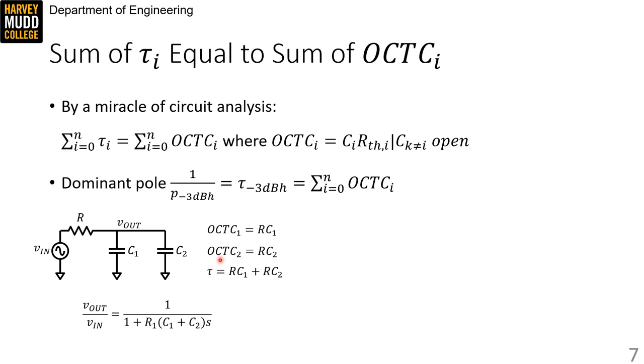The second open circuit time constant, OCTC2 for C2, will be R times C2, because this will be an open circuit, and just looking out of C2, we'll see R to ground. So open circuit time constants predicts the corner frequency of this system will be τ is equal to RC1 plus RC2.